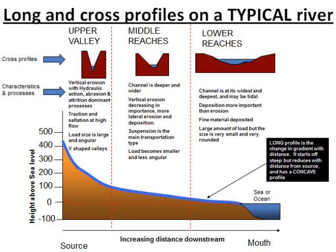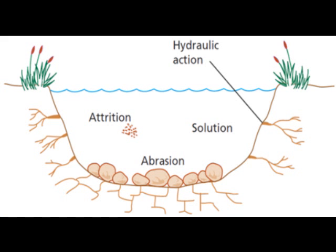Erosion is the wearing away of land. Most erosion occurs during flooding. There are four main types of erosion. Attrition: material is moved along the riverbed, it collides with other material and breaks into smaller pieces.